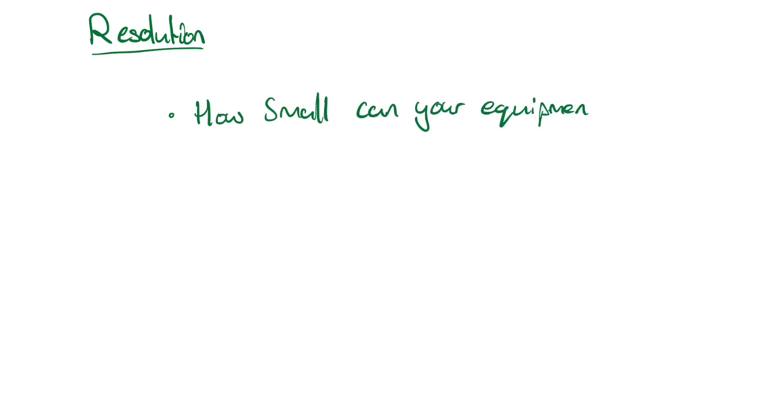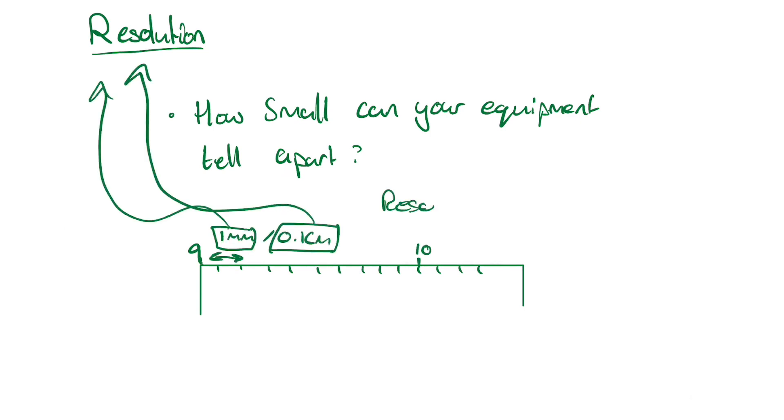Resolution. This is the smallest change in the quantity being measured a piece of equipment can measure. It's the smallest visible change in your instrument. So, for example, your ruler has a resolution of one millimeter.